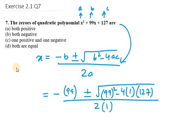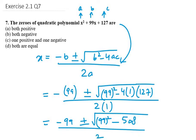So we get -99 ± √(99² - 4 × 127). So 127 × 4 is 508 over 2. Now in this case what we get is...